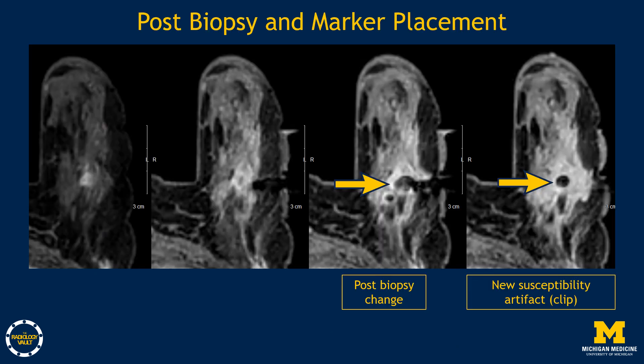After sampling, you may place a biopsy marker and take an image, or take an image before placing the biopsy marker, depending on how well your patient is tolerating the procedure. In this case, after sampling, we see post-biopsy changes in the expected location of our target. Another image was taken after biopsy marker placement, which shows a new susceptibility artifact. It can be useful to take an image after sampling and prior to marker placement to reduce confusion over identifying the biopsy marker versus post-biopsy gas.